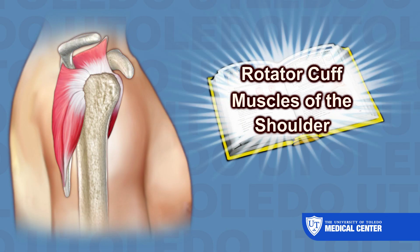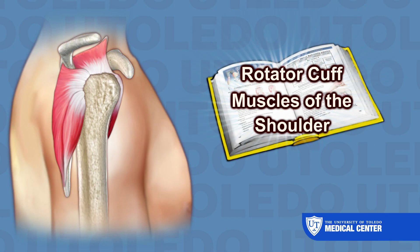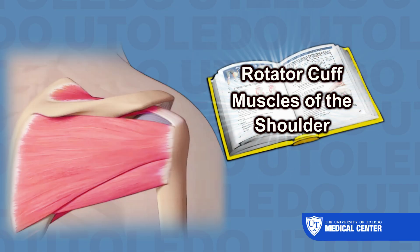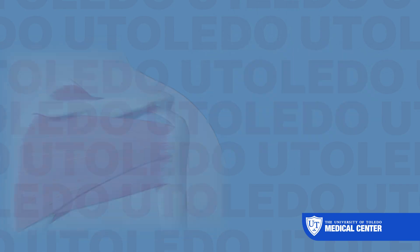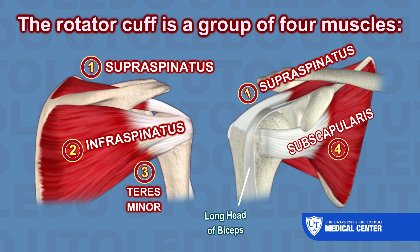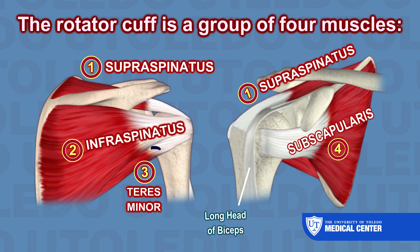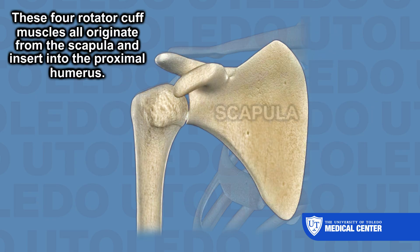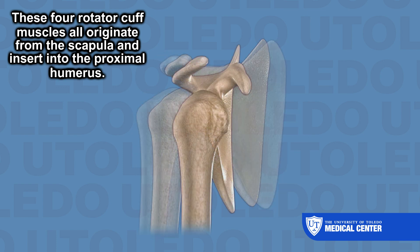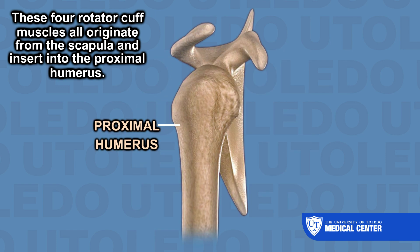In this video, we are going to discuss the anatomy associated with the rotator cuff muscles in the shoulder. The rotator cuff is a group of four muscles: the supraspinatus, the infraspinatus, the teres minor, and the subscapularis. These four rotator cuff muscles all originate from the scapula, and they insert into the proximal humerus.